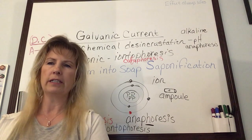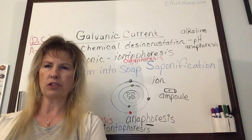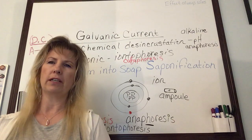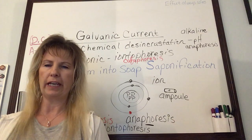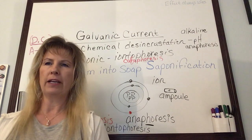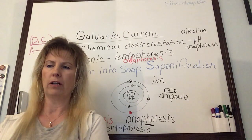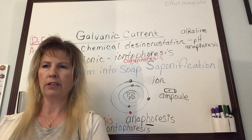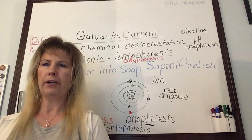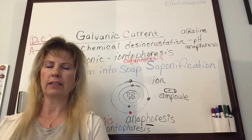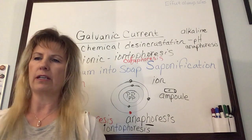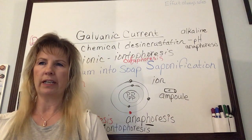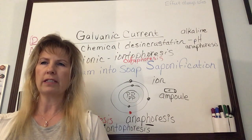Galvanic current is used when your goal is to prepare the skin for extractions or to assist in delivering products into the skin. We can use it in a facial right after exfoliation, right prior to extractions to liquefy sebum so extractions come out easier, or prior to masking to deliver ingredients into the skin during the final stages of a facial.